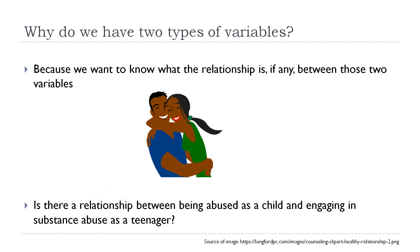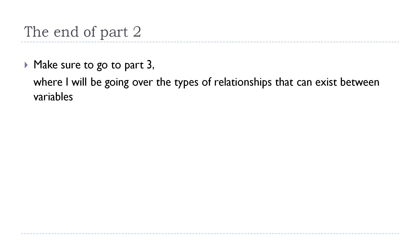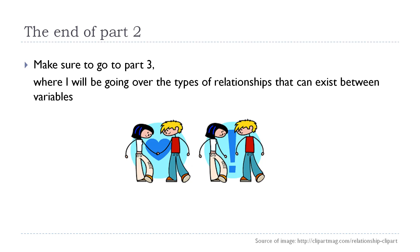And that's all I have to say about the main types of variables — that's the end of part two. Make sure you check out part three, where I'll be going over the types of relationships that can exist between variables. Just as a spoiler: just like relationships between people, they can have their ups and downs, and they can stay flat. It's all very interesting, so make sure you check that out when I post it. Thanks for watching. Bye.